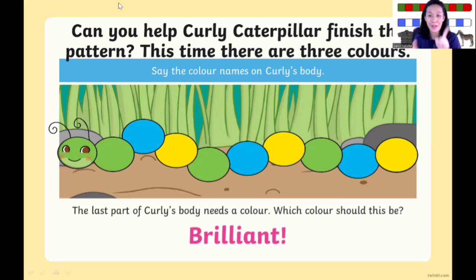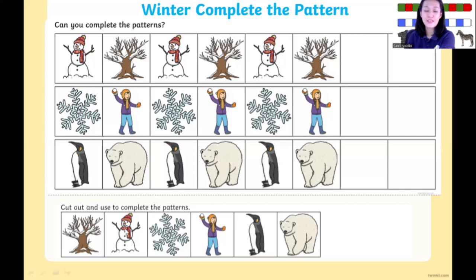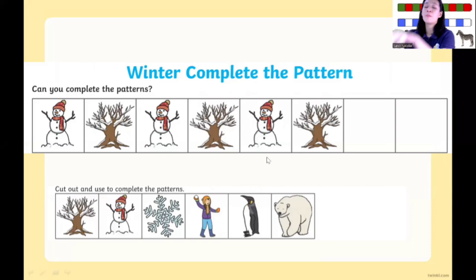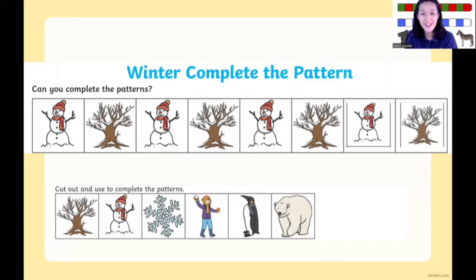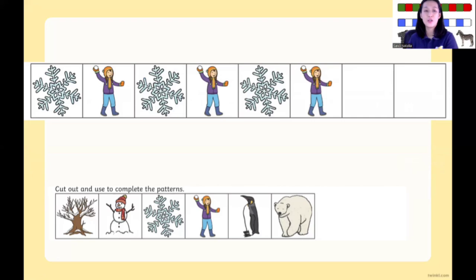Now it's time to go to your worksheet. Let's take your worksheet and your glue. You can cut the pictures below, children, and let's complete the pattern. Number one: Frosty the snowman. Snowman, tree, snowman, tree, snowman, tree, snowman, tree. And then tree. Yes, that's good. This is the pattern: snowman, tree, snowman, tree, snowman, tree, snowman, tree. You can paste your picture in the box.